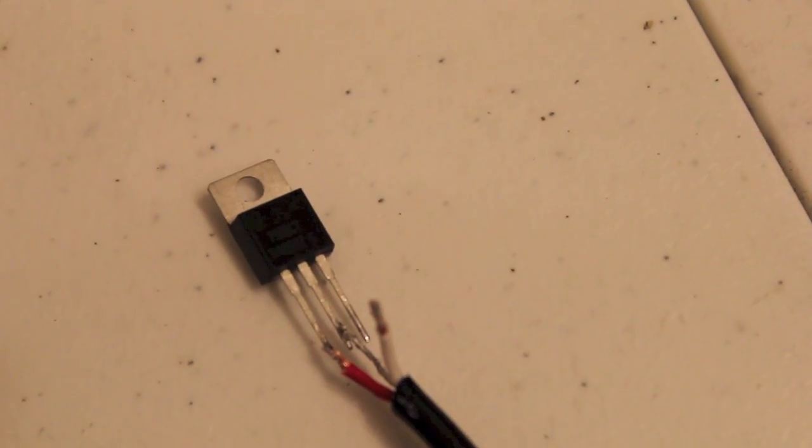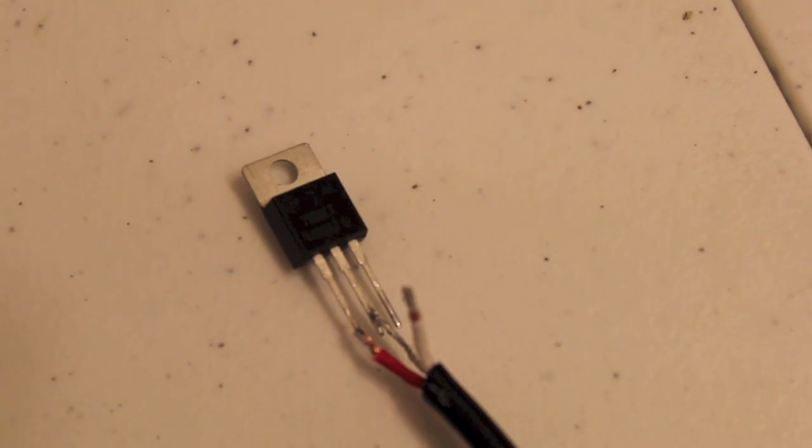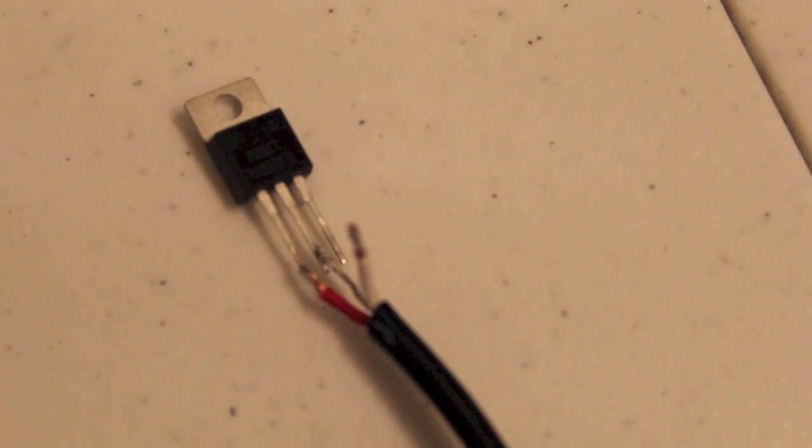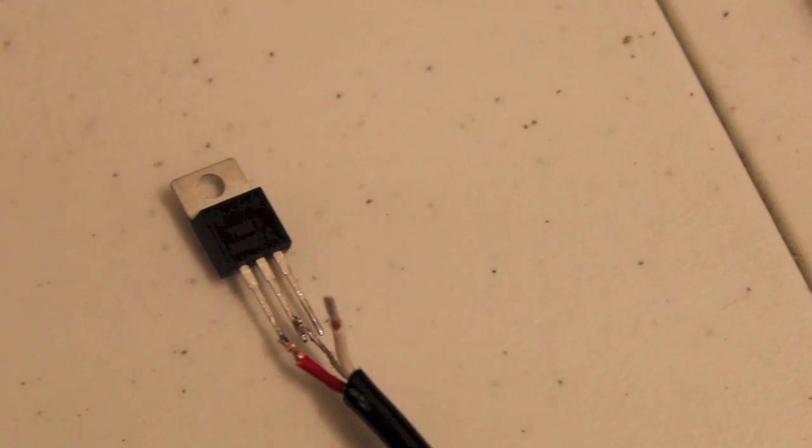Here we have a voltage regulator. This one is an LM7806, which has three pins. The middle pin is ground, which is also the metal thing at the top.